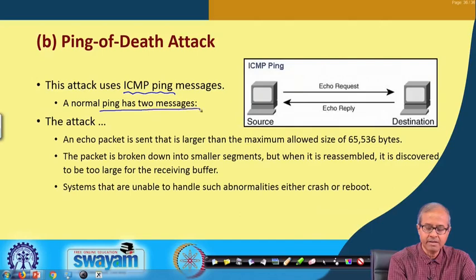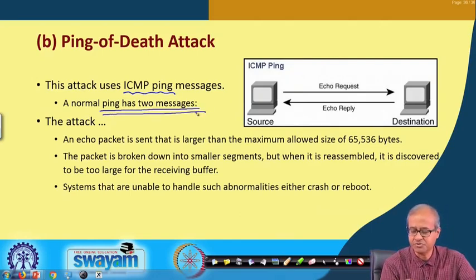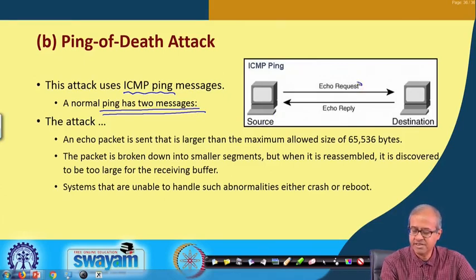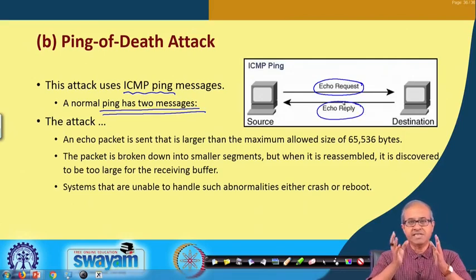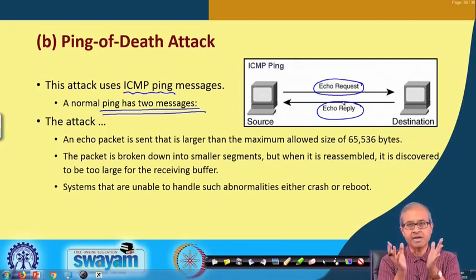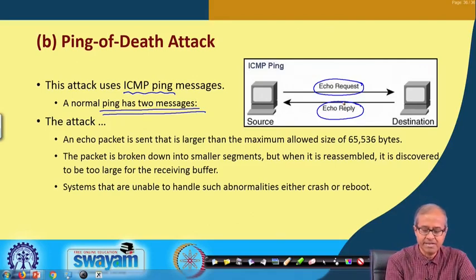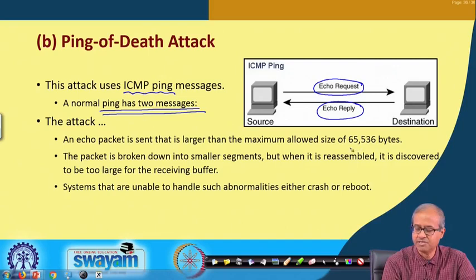A normal ping will generate two messages as the picture shows: if you give a ping from a source to a destination, there will be an echo request followed by an echo reply. This echo request and echo reply packets are typically small packets — they do not contain too many bytes, so it is assumed they will certainly be less than the maximum allowed size of 64 kilobytes (65,536 bytes).